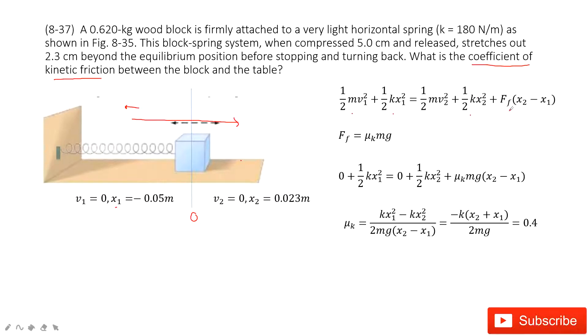So this thermal energy is the friction times the distance it's covered. The displacement it covers is x2 minus x1. So this friction is just μk times m times g.